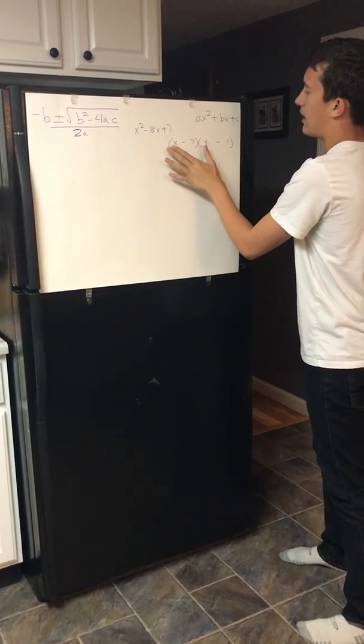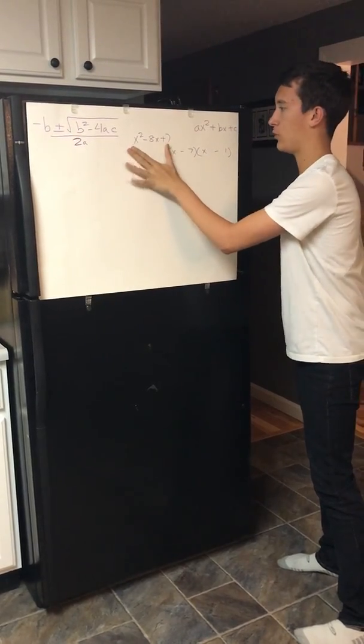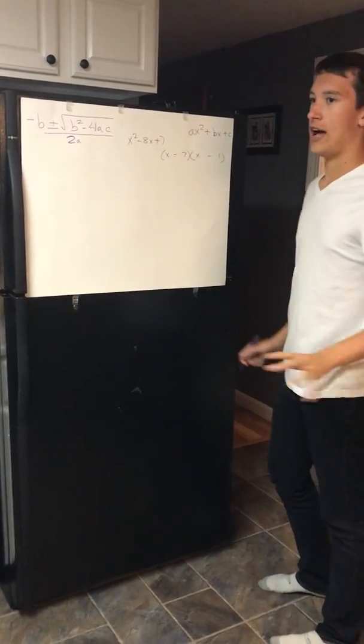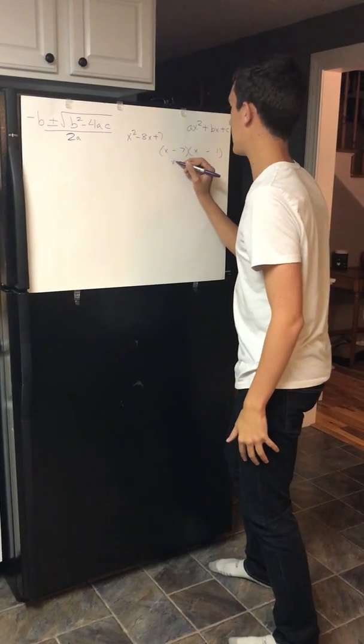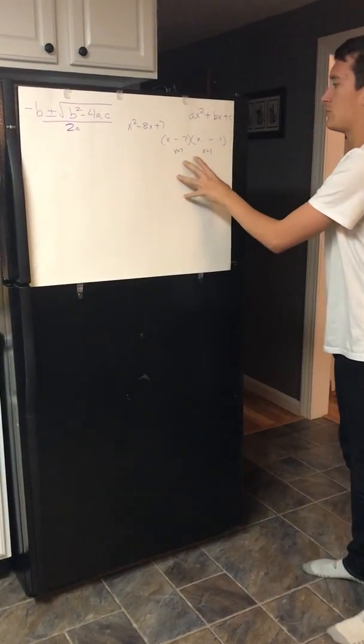So now you have your two equations that have been broken down from this one equation. So now you have your x variable. So you have x equals 7 and x equals 1. These are your two formulas.